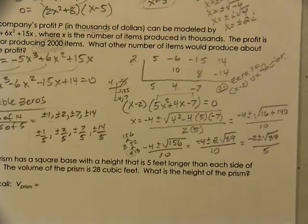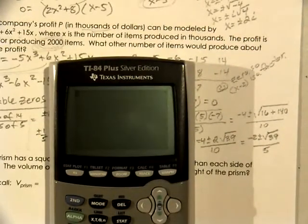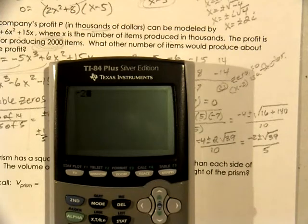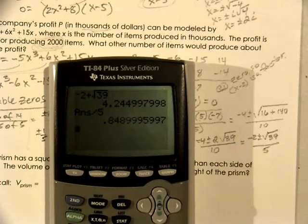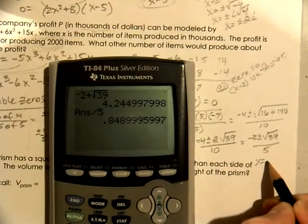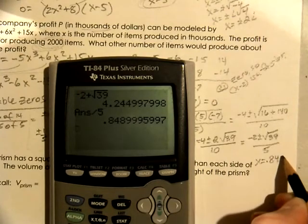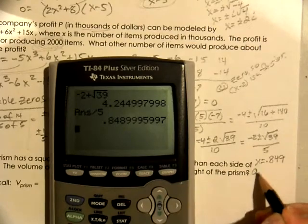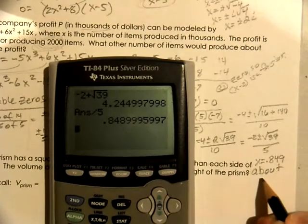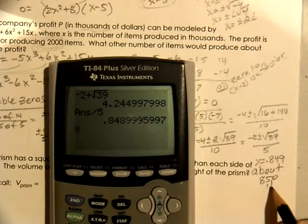So if you wanted to reduce you see that a 2 comes out of every one of those your simplified version of your exact answer is that. And by using our graphing calculator we can say that negative 2 plus the square root of 39, get that answer and divide that by your 5 is 0.849. We'll round up to 849 so that is about 850 items.